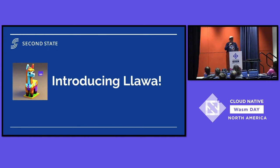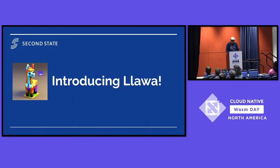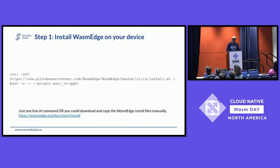The first demo I'm going to show you is how to do AI inference with this large language model. This model is the same size as Llama 2 7B — about five gigabytes. The steps are really easy. The first step is to install WasmEdge on your device — it's a one-line command, easy install. It installs on Mac, PC, and even Raspberry Pi.